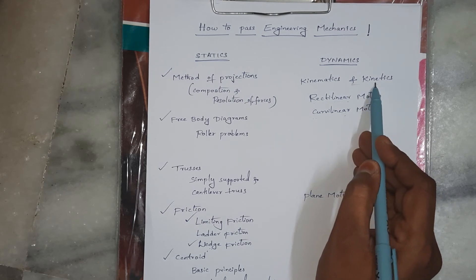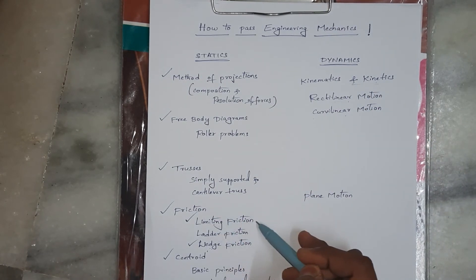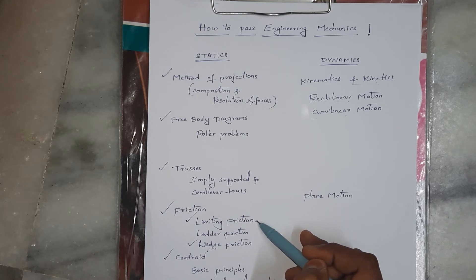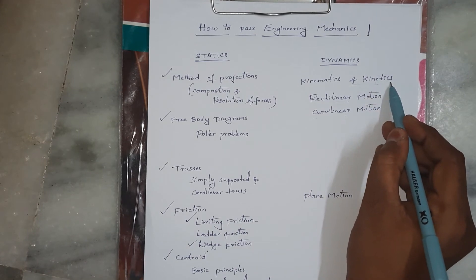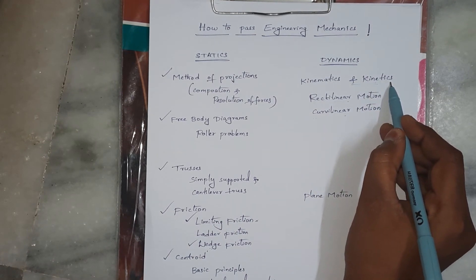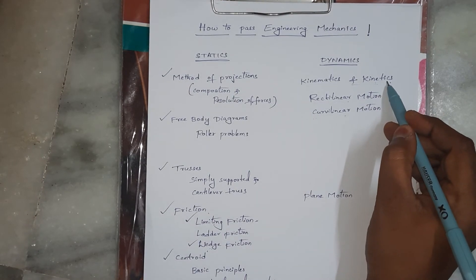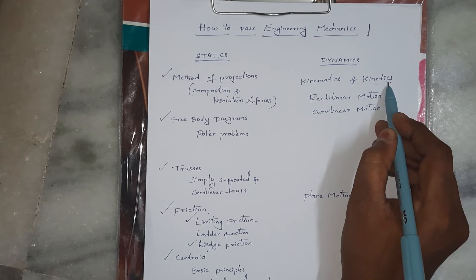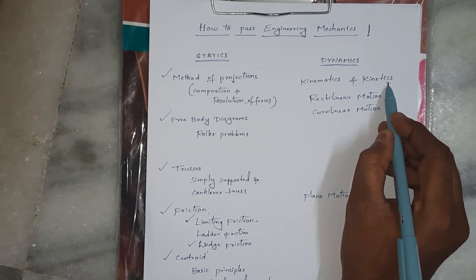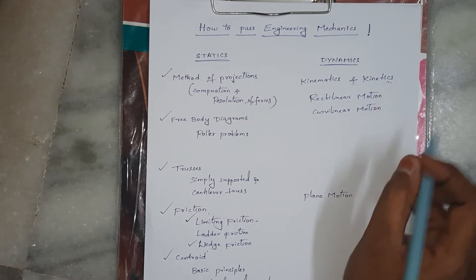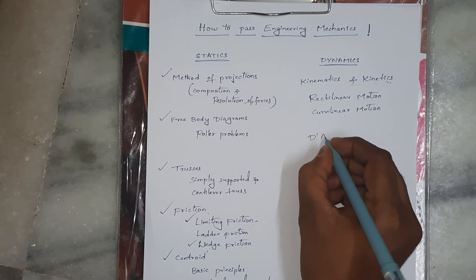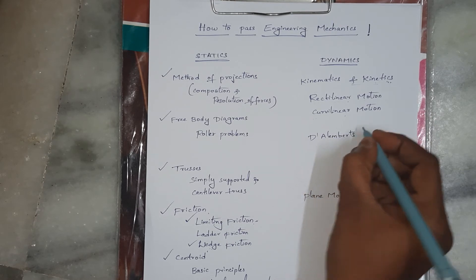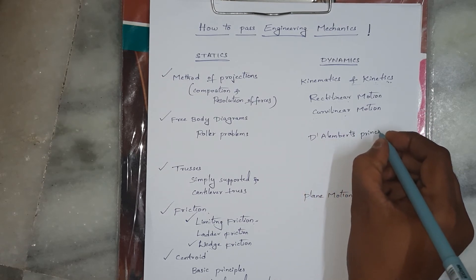Under Kinetics, you still need to draw free body diagrams because forces must be considered. The difference between friction problems and kinetics problems is: in friction you represent the friction force, while in kinetics you also represent the inertia force. Once you understand this one difference, kinetics problems become quite simple. The main principle in Kinetics is D'Alembert's Principle.